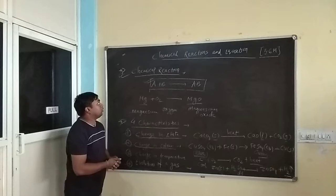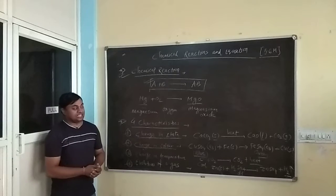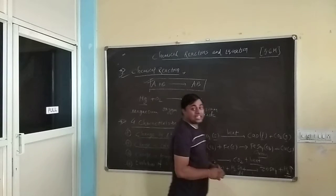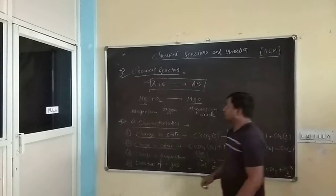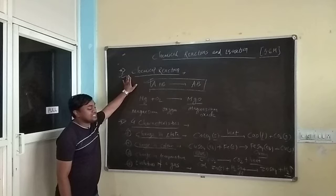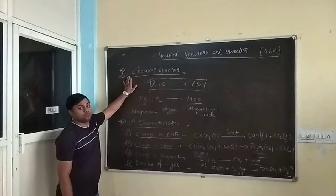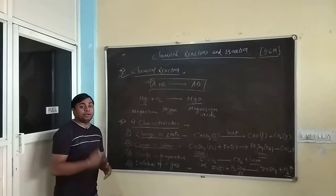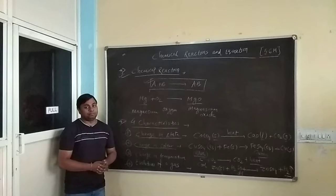Hello students, today I am going to explain you about chemical reactions and its characteristics. In this video we will see what is chemical reaction and how we can say a chemical reaction has taken place. A chemical reaction we can define as a process in which a new substance is formed. Whenever two or more substances combine to form a new substance, then we can say a chemical reaction has taken place.